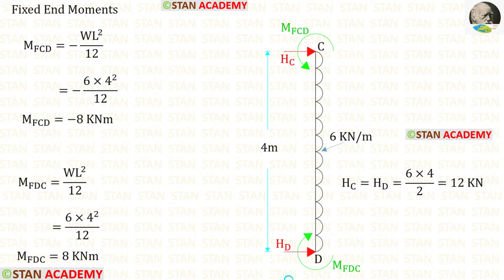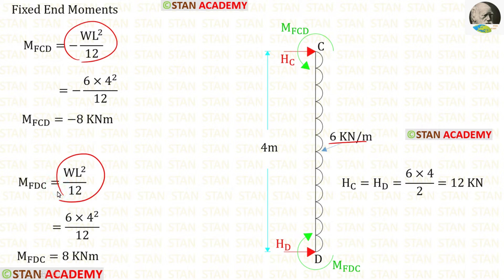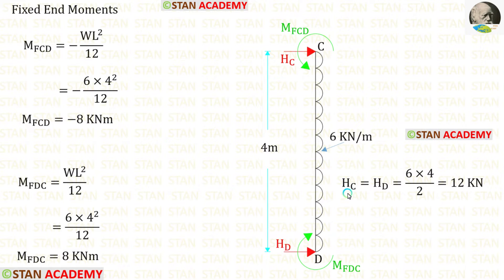Now let us find the fixed end moments and reactions in column CD. In column CD, we have a uniformly distributed load of 6 kN per meter. The formulas to find the fixed end moments are minus WL² over 12 and positive WL² over 12. Using the formula, we get M_CD and M_DC. For the horizontal reactions H_C and H_D, we multiply the load 6 by the distance 4 and divide by 2, giving us 12 kN.